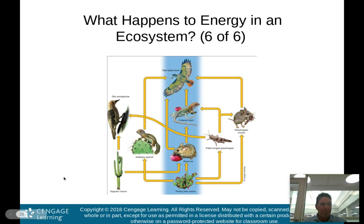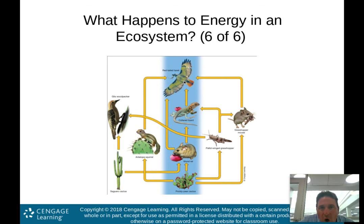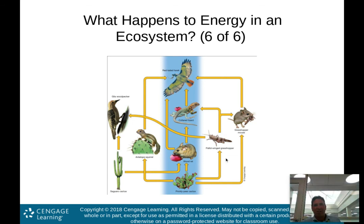And here is an example of a terrestrial food web, found in a temperate desert ecosystem. Understand how to read these: the prickly pear cactus is eaten by the wood rat, the antelope squirrel, and the grasshopper mouse. The grasshopper mouse is then eaten by the red-tailed hawk. The pallid-winged grasshopper is eaten by the Gila woodpecker. These are just examples of food webs.